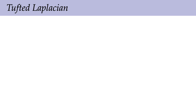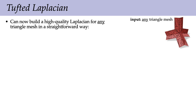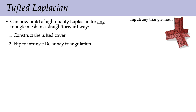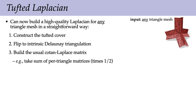Once we have this tufted cover, we can start doing mesh processing that looks somewhat like ordinary mesh processing. In particular, we can build a very nice Laplace operator for any triangle mesh in a straightforward way. First we construct the tufted cover, then flip the edges to an intrinsic Delaunay triangulation, and then on this final triangulation we build the usual Cotan-Laplace matrix — basically summing up the ordinary 3×3 stiffness matrices per triangle. We divide by two because we have a double cover of the surface, but otherwise it's exactly like the ordinary Cotan-Laplace.